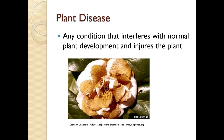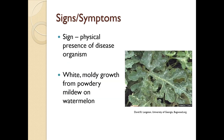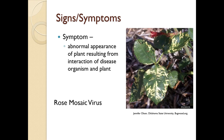In diagnosis, a sign is the physical presence of a disease organism. In this case it's the white moldy growth from powdery mildew on watermelon. A symptom is the abnormal appearance on the plant resulting from the disease. Here we have rose mosaic virus.